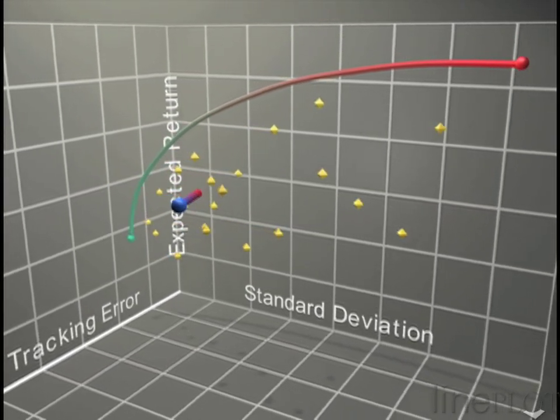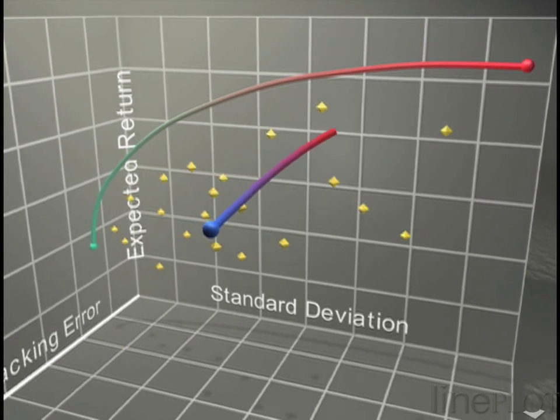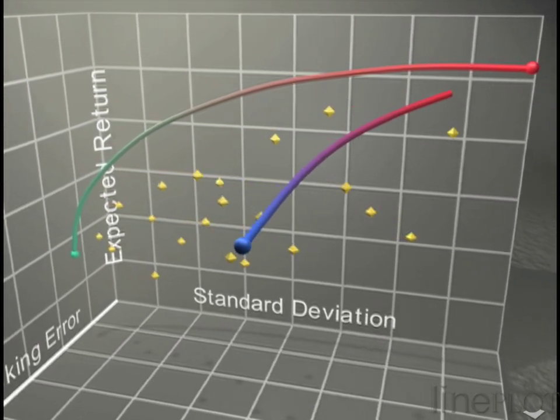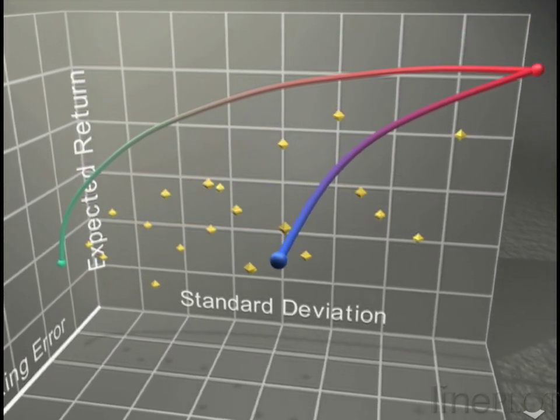It extends from the blue benchmark and meets the mean variance efficient frontier at the location of the highest expected return portfolio, which is shown in red.